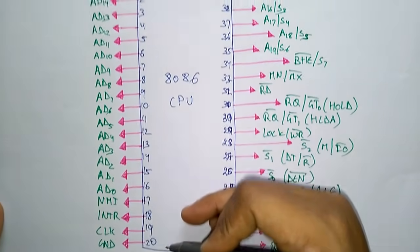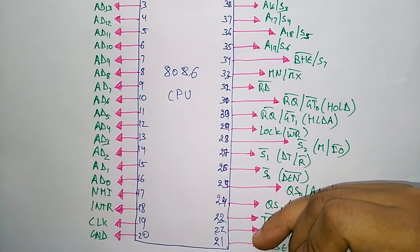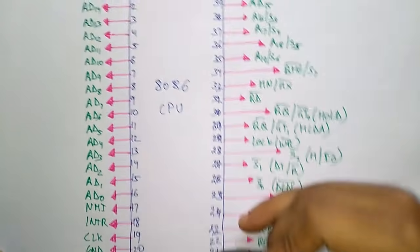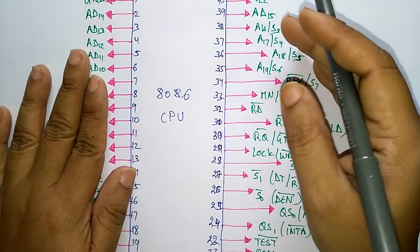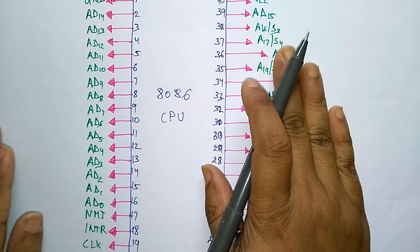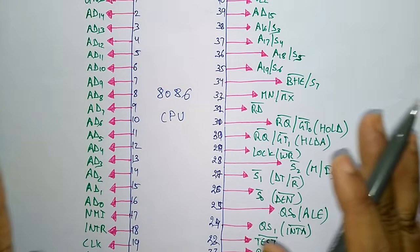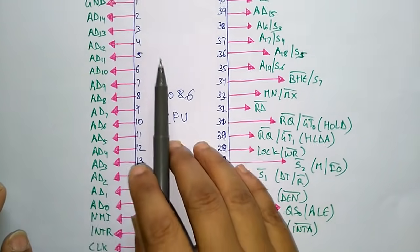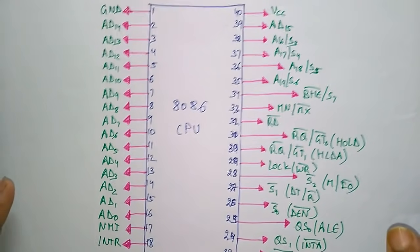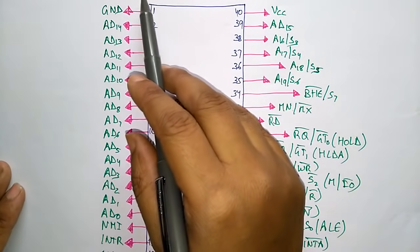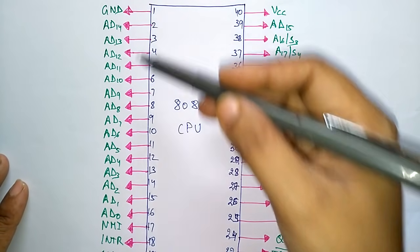On one side, pins 1 to 20 are connected, and on the other side, pins 21 to 40 run from bottom to top — so 20 pins on each side. Each pin has its specific function. The first pin is the ground pin.